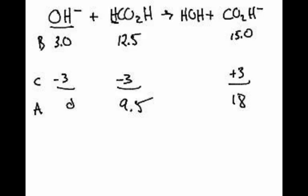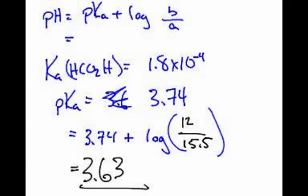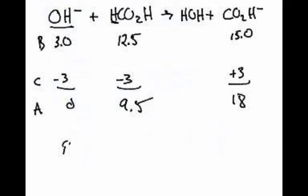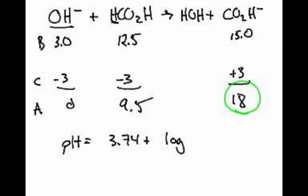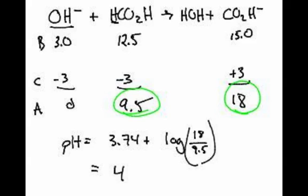Guess what we have? We have a buffer. And we can use the same equation because it's the same buffer of formic acid and its partner. So we're going to use this 3.74. So the pH would be equal to 3.74 plus the log of the base. The base is the 18 number, and then the acid is the 9.5. So I say 18 over 9 and a half, and that just comes out to 4.02. That's it. Not hard.